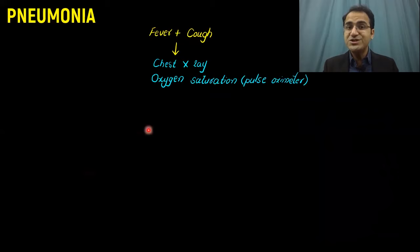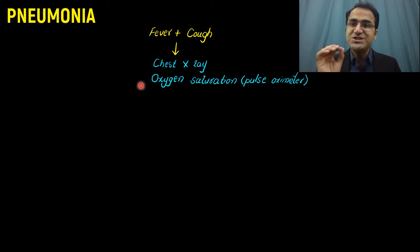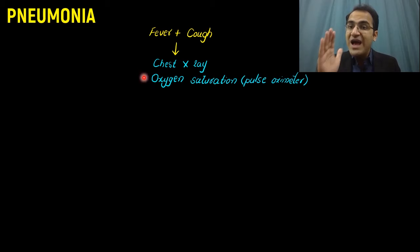If a patient presents with fever and cough, the first thing you do is order a chest x-ray and check oxygen saturation. These patients might be hypoxemic when they present and would require oxygen. You look at the chest x-ray to see the infiltrates in the lung, which will help you classify the type of pneumonia the patient is having.